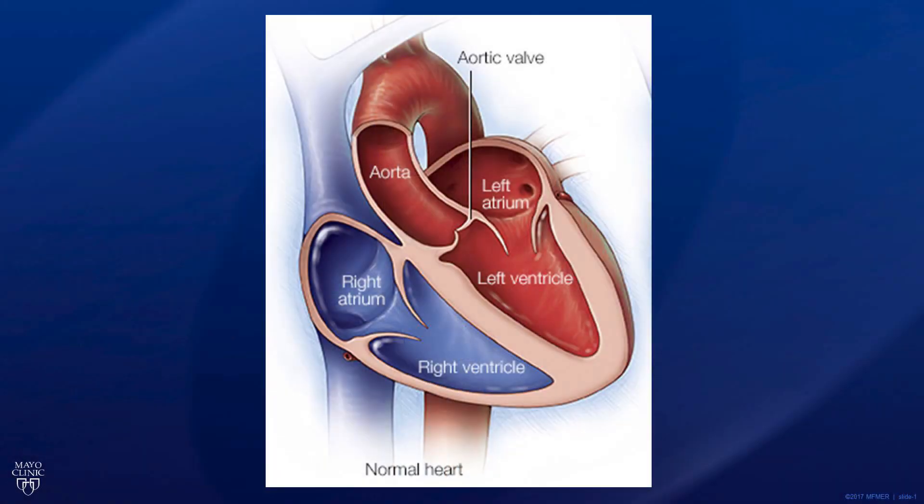The normal aortic valve is a three-leaflet structure that separates the ascending aorta from the left ventricle, which is the main pumping chamber of the heart. During the contraction of the heart, the aortic valve typically opens three to five square centimeters.